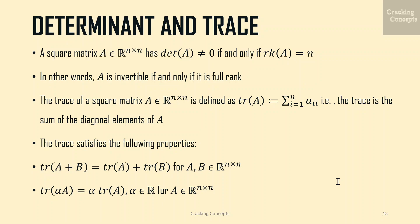A square matrix A has non-zero determinant if and only if the rank of the matrix is n. In other words, A is invertible if and only if it is full rank. When mathematics was mainly performed by hand, the determinant calculation was considered an essential way to analyze matrix invertibility. However, contemporary approaches in machine learning use direct numerical methods that have superseded the explicit calculation of the determinant.